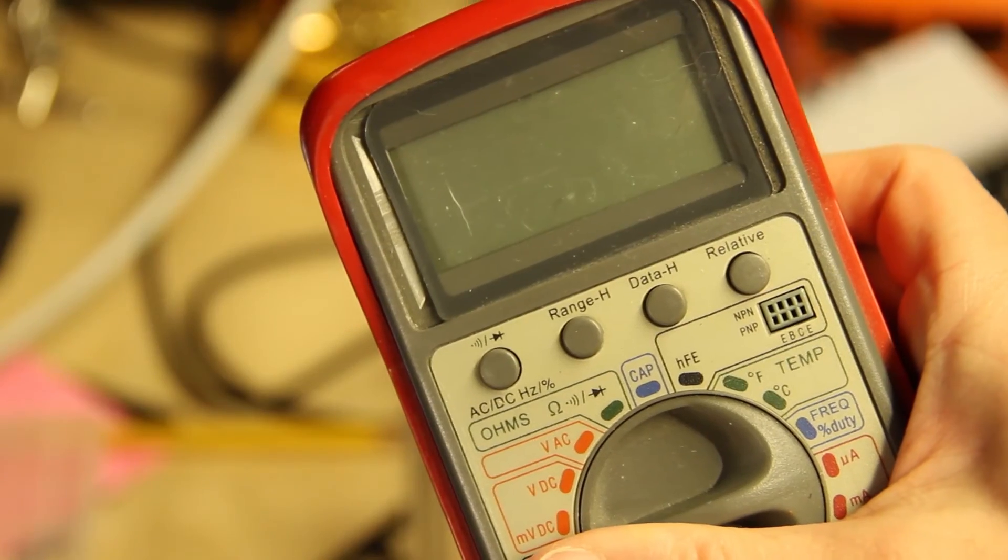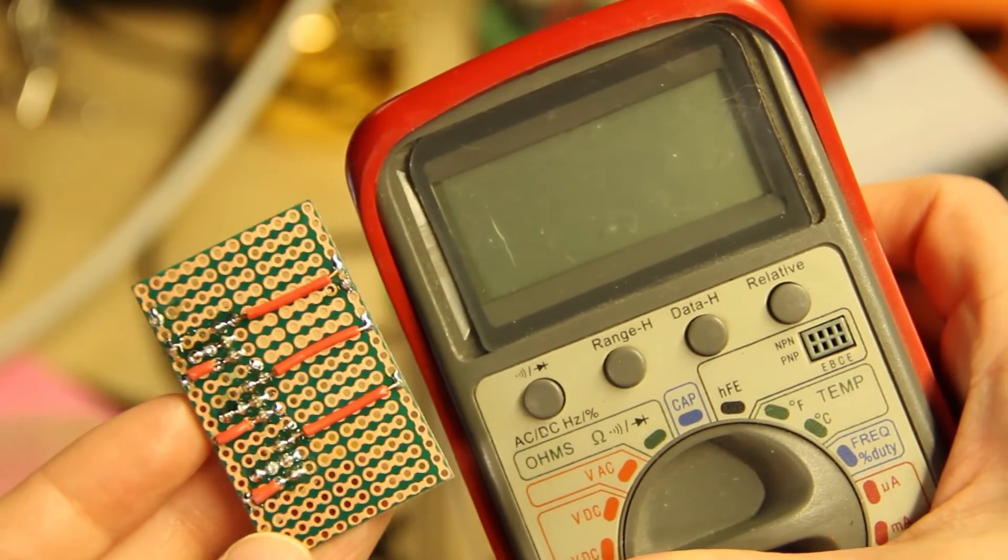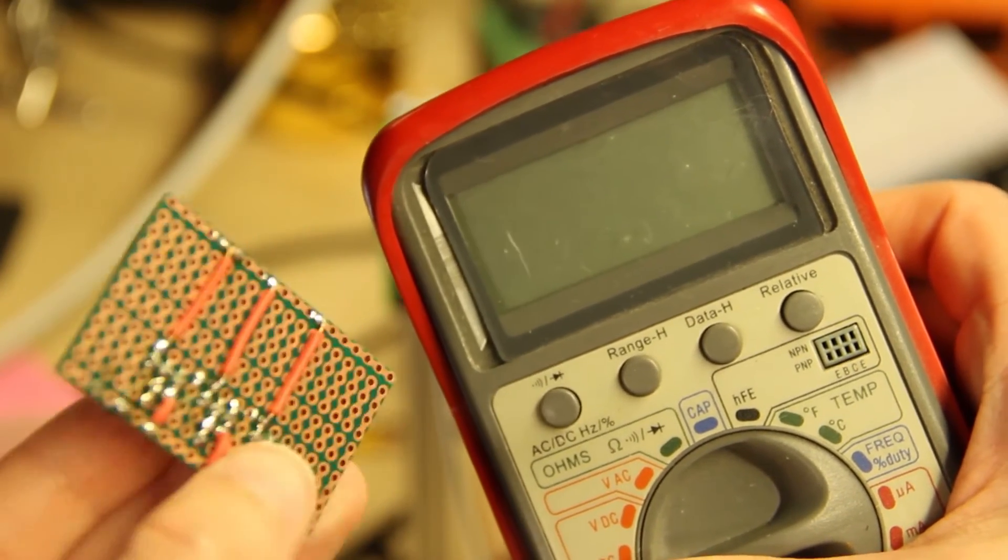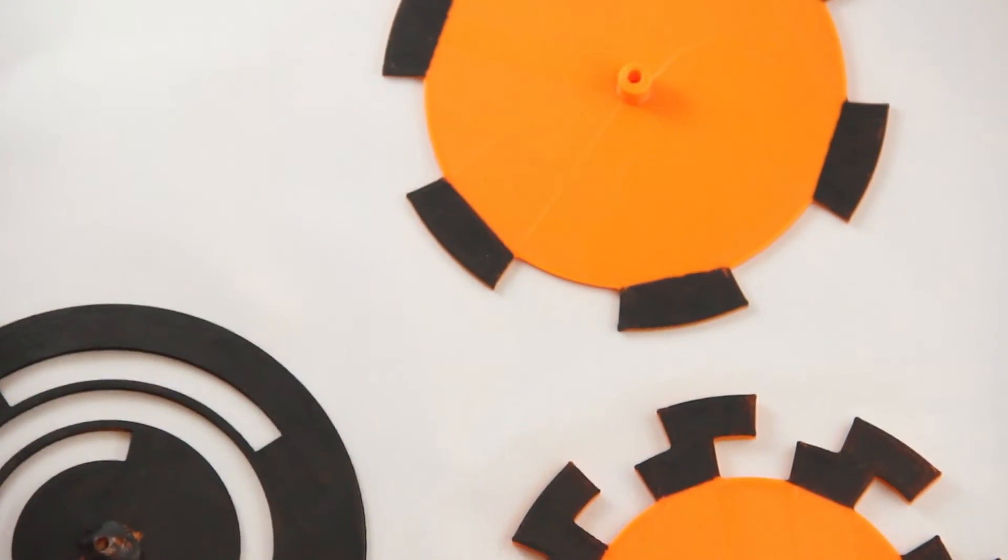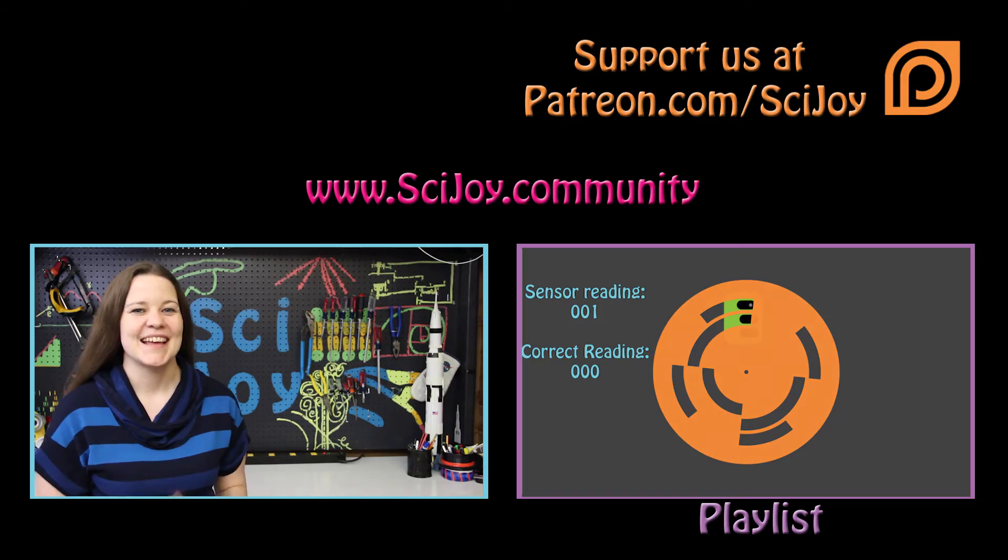we used a multimeter and probed each of the sensors. The bottom one was always above zero volts, so we knew we had a bad crimp and we just re-crimped the wire. We also had to paint the wheels because the infrared signal was transmitting through the 3D printed material.